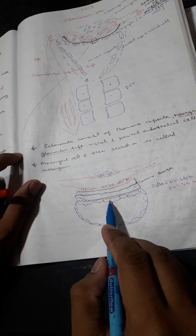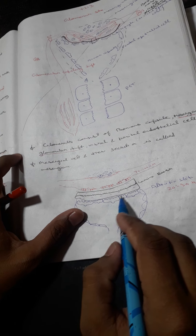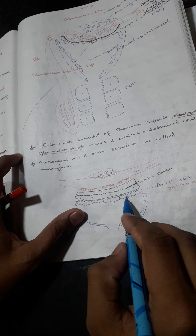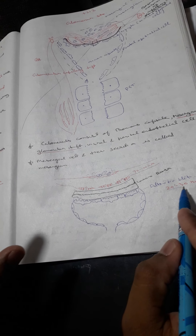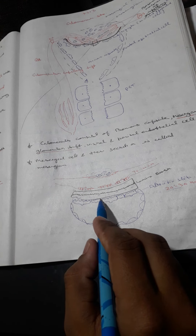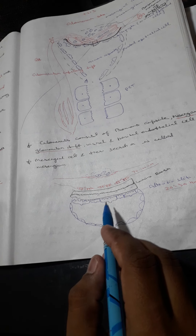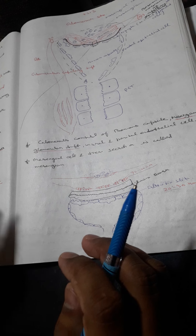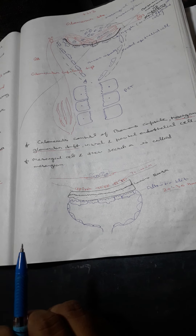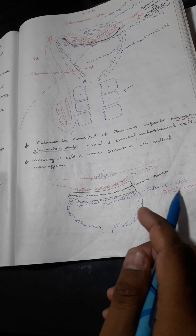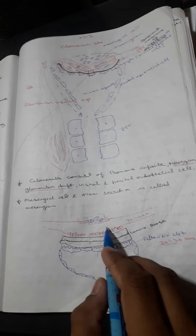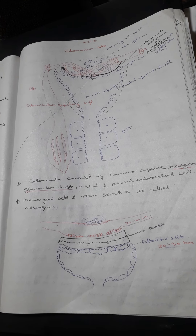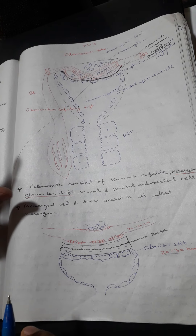The epithelial cells of Bowman's capsule have filtration slits, which are very narrow — about 20 to 30 nanometers. These filtration slits are more responsible for determining which molecules cross the glomerular capillaries and enter Bowman's capsule and the PCT, because their size is small at 20 to 30 nanometers, while the fenestrated capillary pores are about 70 to 100 nanometers.